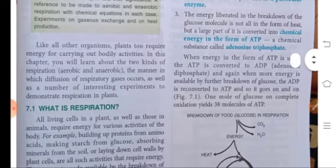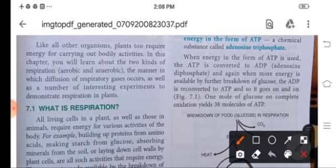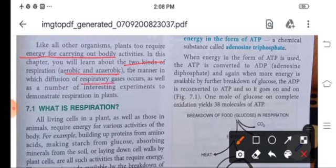So children, like animals, plants also require energy for carrying out their activities. So in this chapter we are going to learn the two kinds of respiration, aerobic and anaerobic respiration, and in which diffusion of respiratory gases occurs and other experiments also.